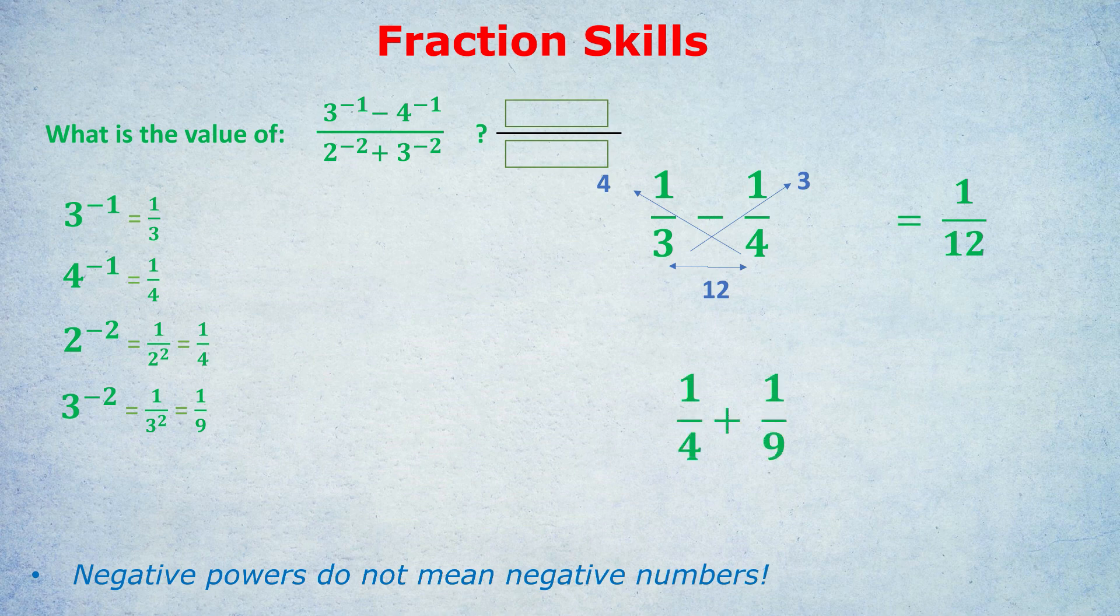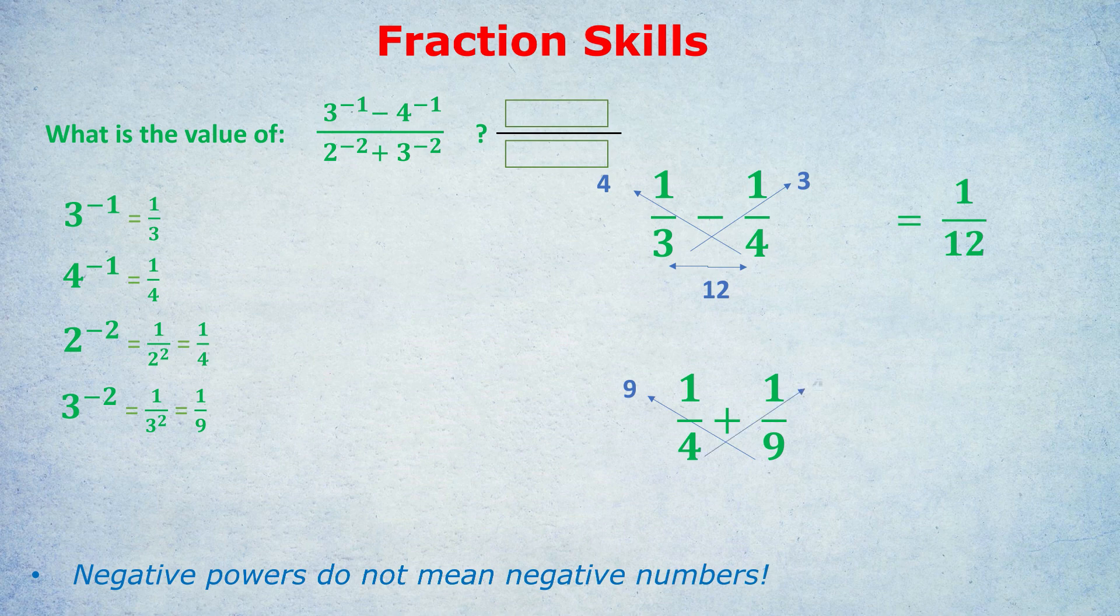Let's speed through the next addition. 1 quarter plus a 9th. To the left, that's 9. To the right, that's 4. At the bottom, it's 36. 9 plus 4 is 13 over 36.